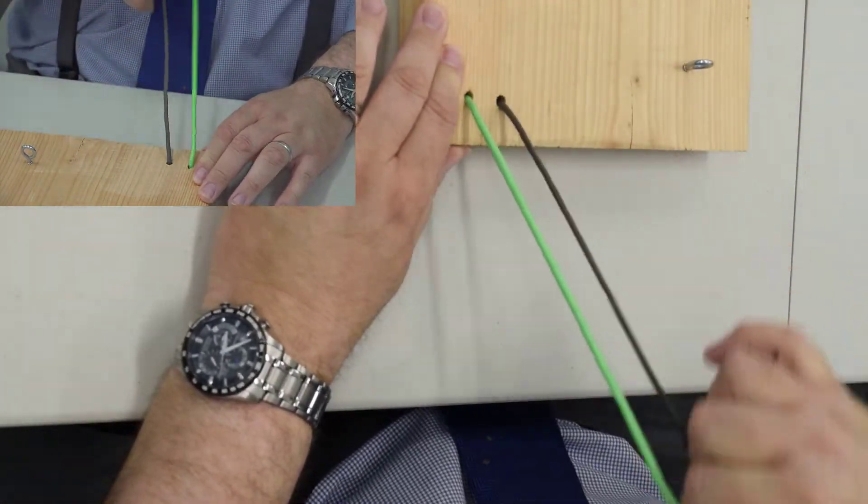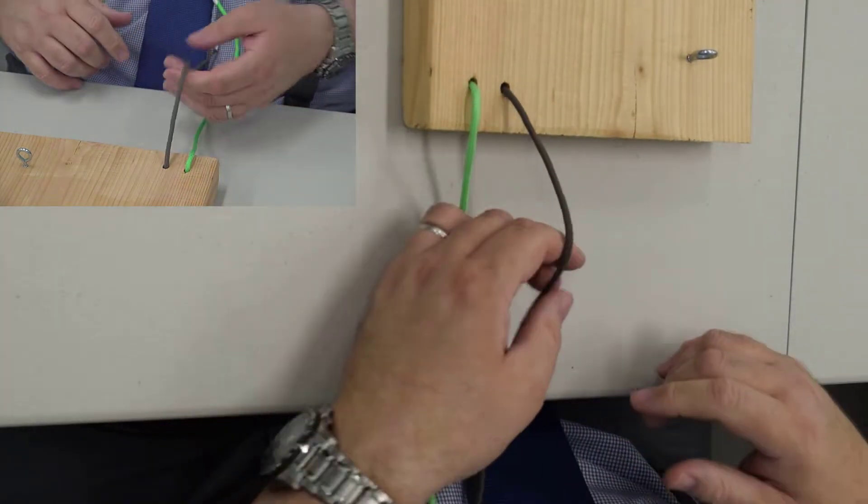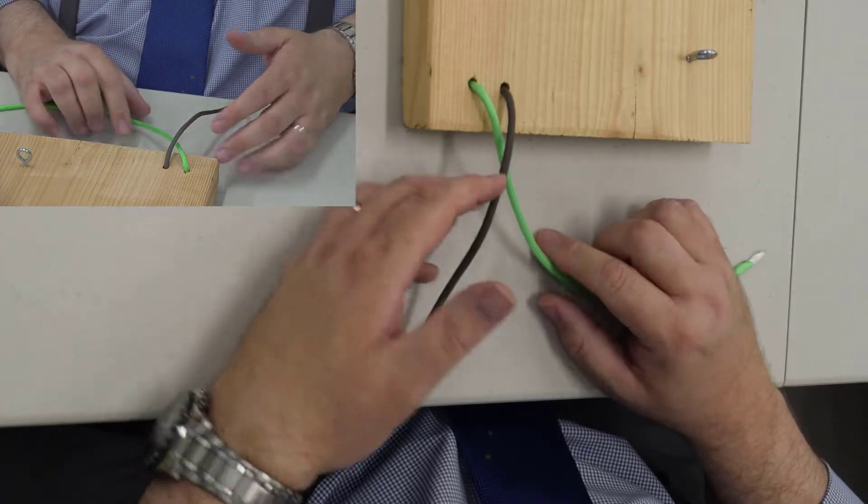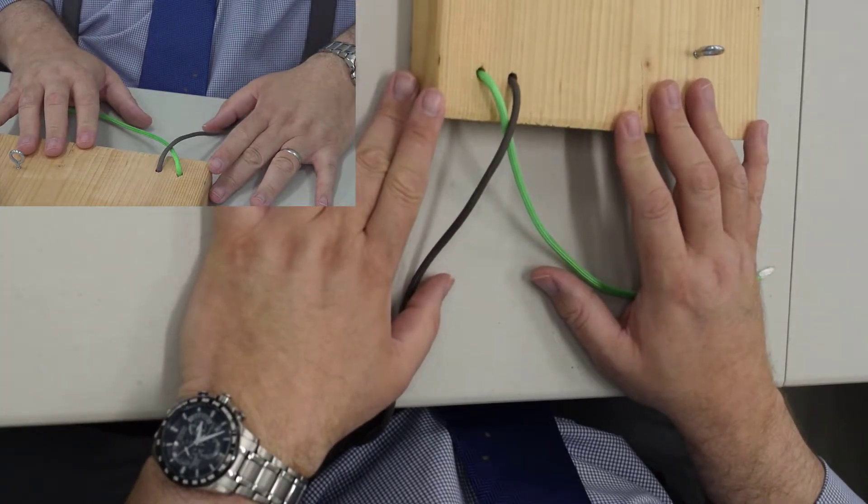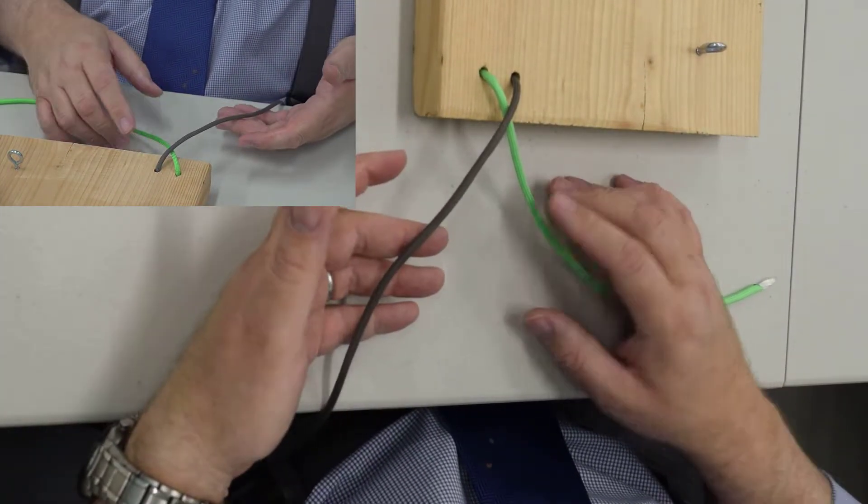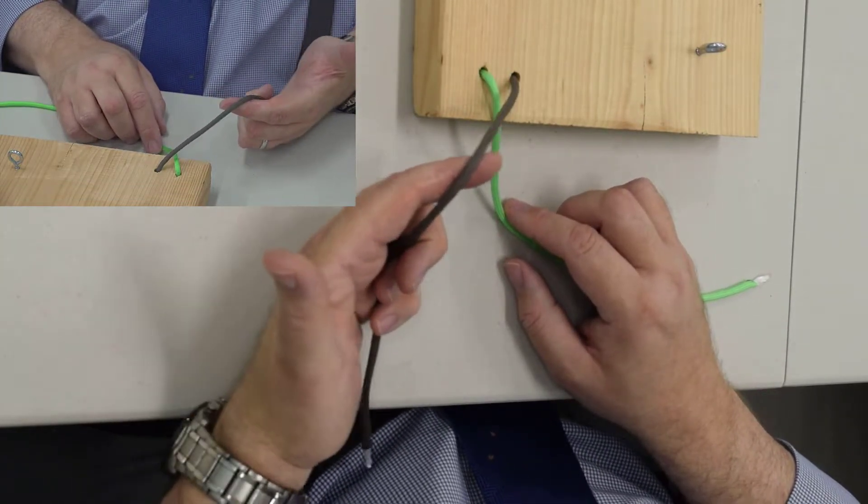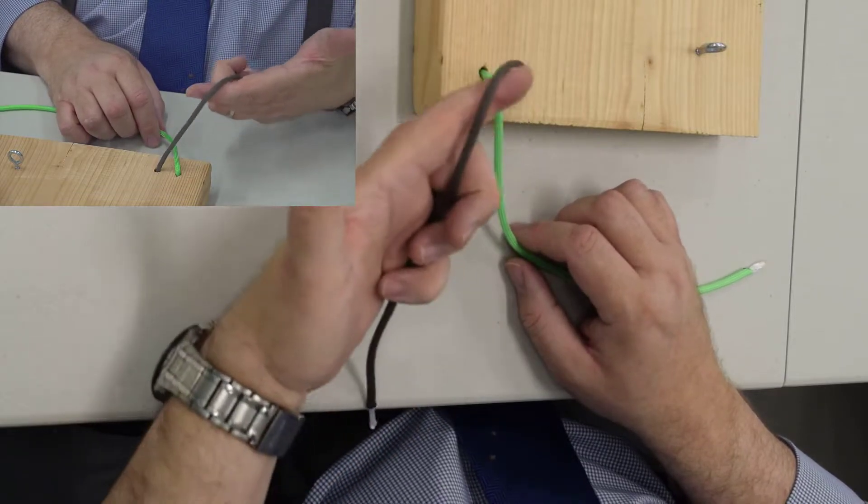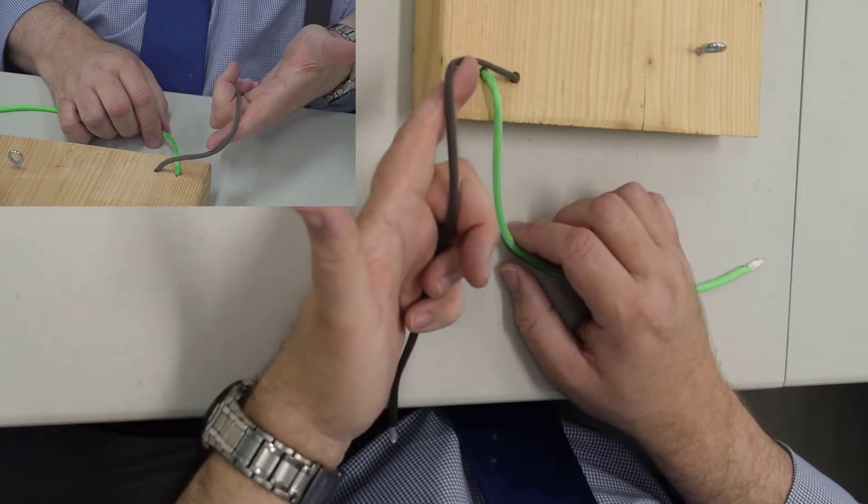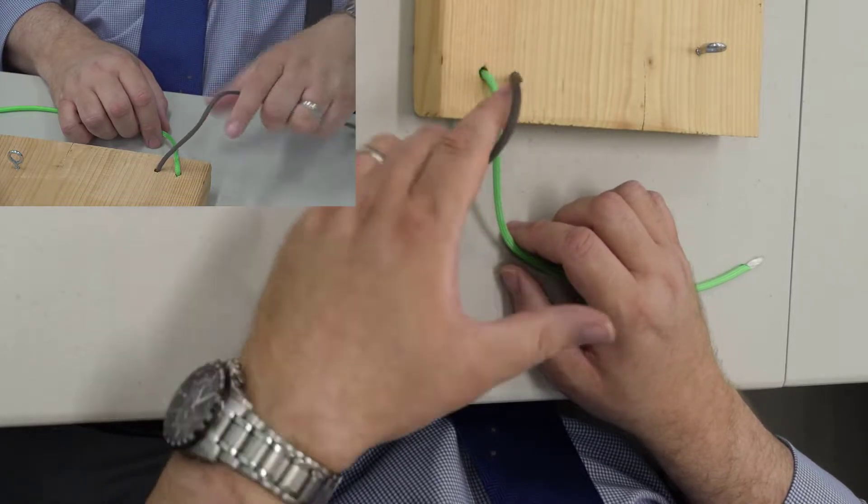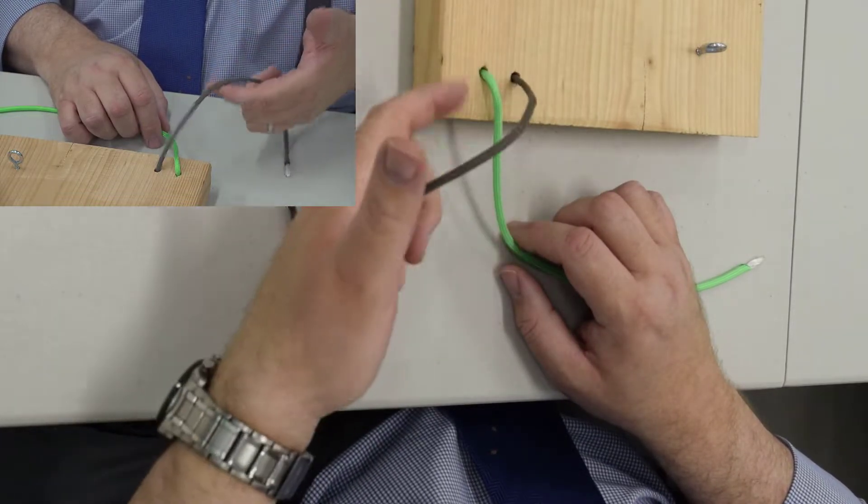So now let me demonstrate to you the two-handed tie. The two-handed tie is similar. So let's start with brown over green. So for a two-handed tie, we do what I call make the gun. And then I say we'll do a flip.